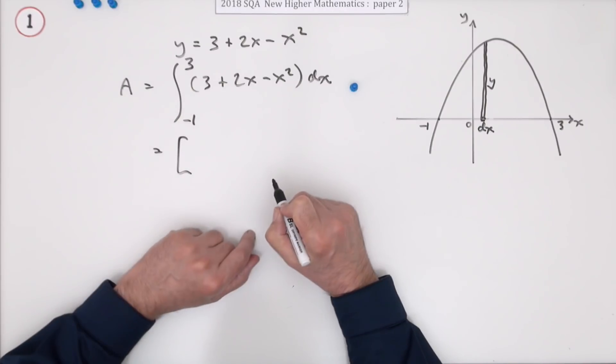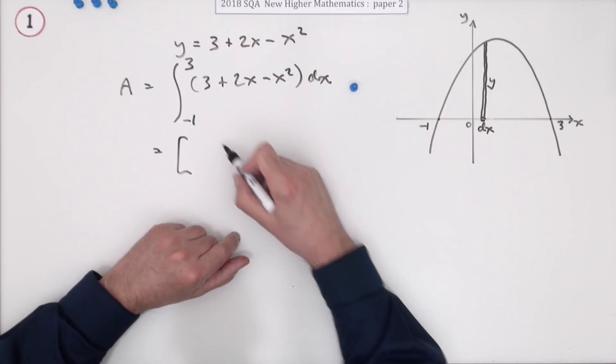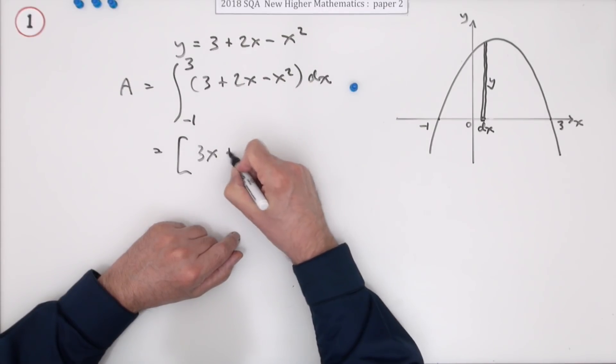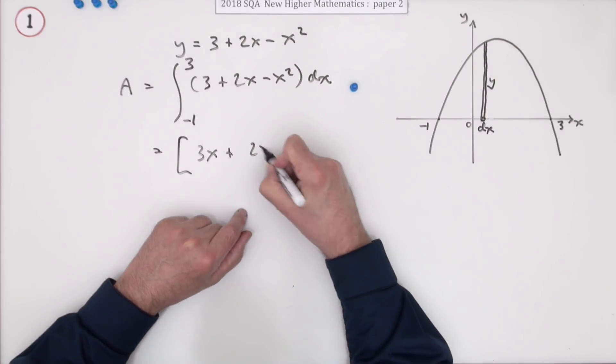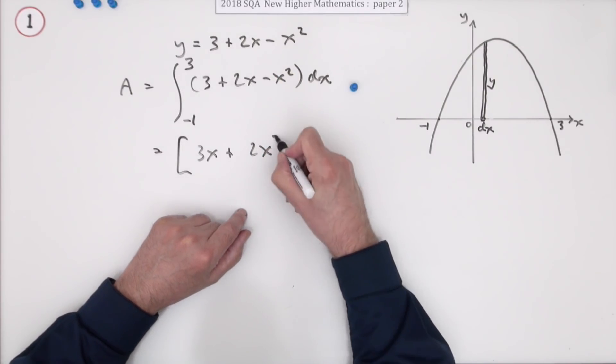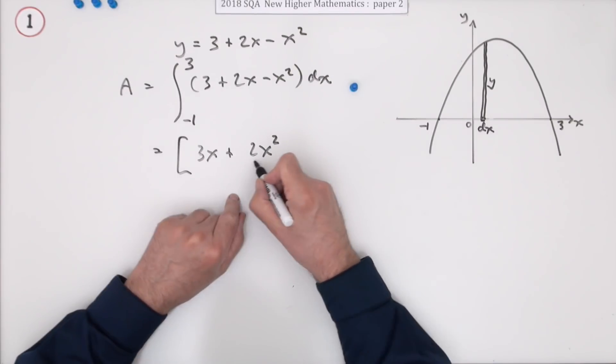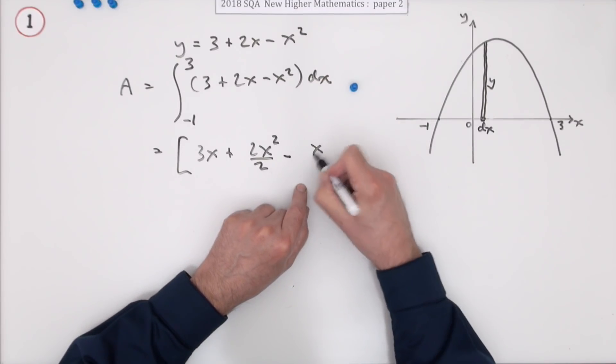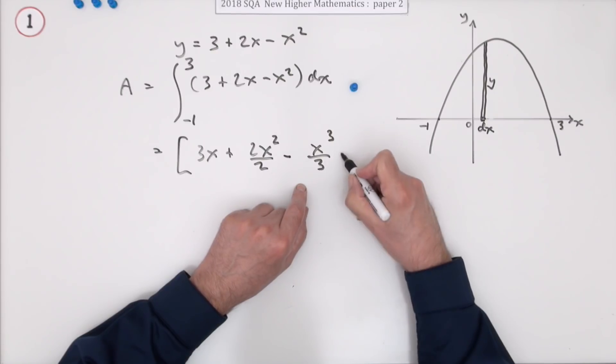Now, the second part is to integrate it. Don't differentiate it. So the 3 is going to go up to 3x. Remember, let's add 1 to the power. It's the opposite to differentiate. That x is going to go up to x squared, and then it'll be divided by 2. I'll just put it out. I would normally just have done that in my head. It doesn't matter. And that power 2 is going to go up to power 3, but then it's divided by 3.